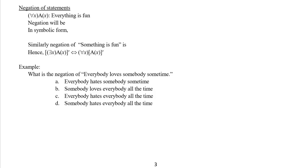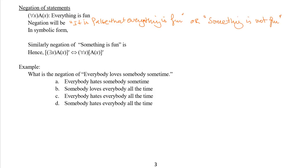Next we cover negation of statements. For example, ∀x A(x) can mean 'everything is fun.' To negate 'everything is fun' in plain English: 'it is false that everything is fun,' or 'something is not fun.' Symbolically, negating ∀x gives ∃x, so ¬(∀x A(x)) ≡ ∃x ¬A(x). Similarly, ¬(∃x A(x)) ≡ ∀x ¬A(x) — 'everything is not fun.'